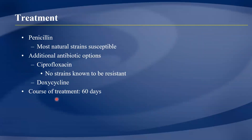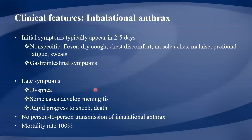Treatment is straightforward since these are bacteria. Penicillins can treat most strains, but ciprofloxacin is the drug of choice because some resistant strains have emerged — currently no strains are resistant to ciprofloxacin. Doxycycline can also be used. Treatment is typically continued for 60 days. Clinical features of inhalational anthrax include fever, dry cough, respiratory manifestations, and dyspnea progressing to respiratory distress, with mortality close to 90–100% if untreated.